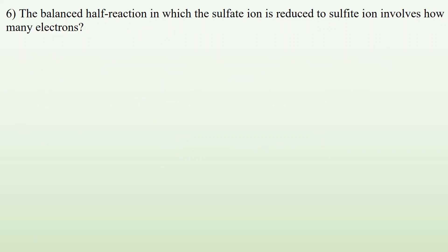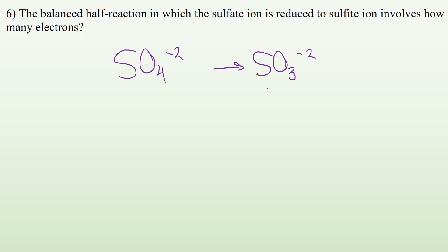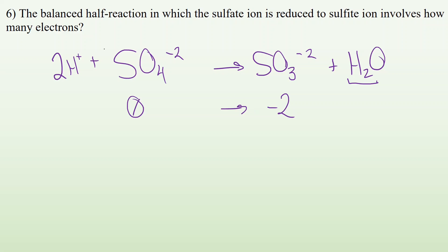Number six: the balanced half-reaction in which the sulfate ion is reduced to the sulfite ion involves how many electrons? Sulfate is SO₄²⁻ and sulfite has one less oxygen but the same charge, so SO₃²⁻. Sulfurs are balanced. Balance oxygens by adding one H₂O on the right. Balance hydrogens by adding two H⁺ on the left. Now check the charge: two pluses and a minus two gives zero on the left, but minus two on the right. Add two electrons to the left to balance. So again, two electrons.